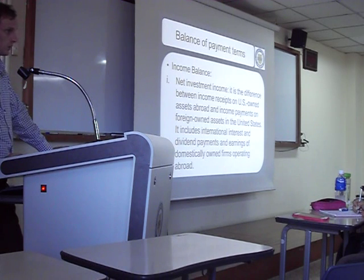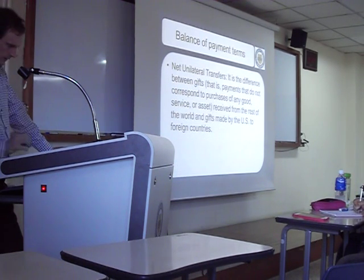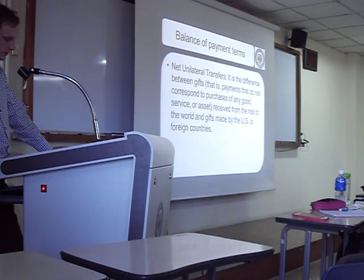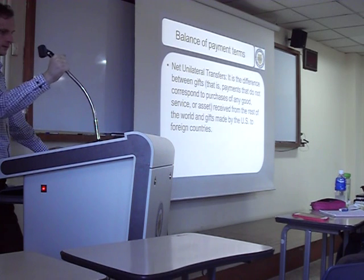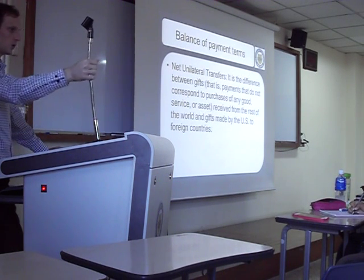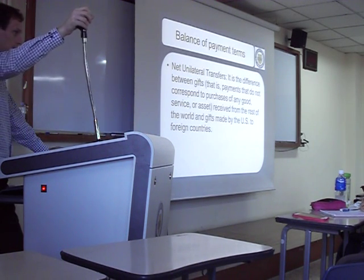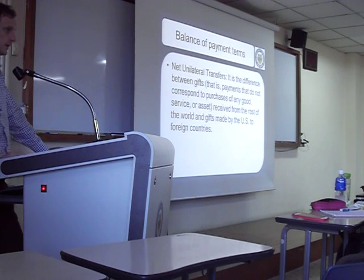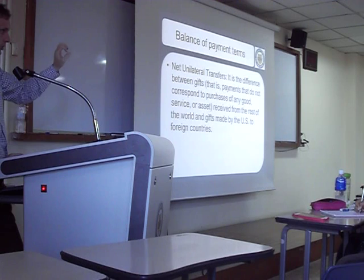This could be a problem for the US in the future: if the interest rate goes up, it has to pay more money in interest on its current account. Net unilateral transfers is the difference between gifts received from the rest of the world and gifts made by the US to foreign countries. For example, someone from South America working in the US sends money back to their family — that's recorded here. Probably more people send money out of the US than into it.